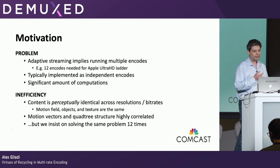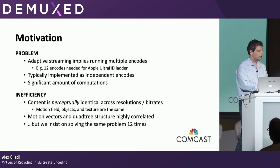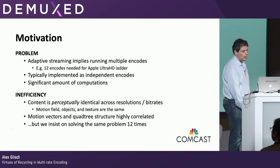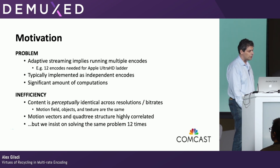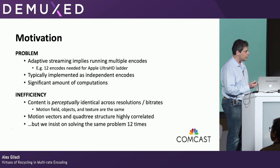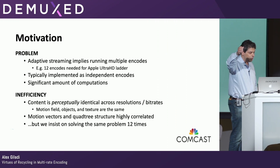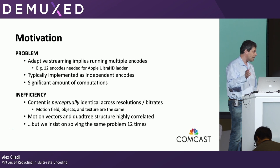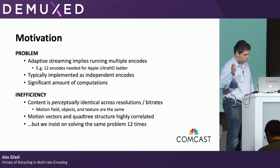The motivation — the same problem: a lot of encodes. In the case of Apple HLS, you have 12 encodes that you actually need to do to provide Ultra HD content. This requires a significant amount of computation. And there is a glaring inefficiency here, because the content is perceptually identical. If I'm moving my hand, those of you viewing it on live stream will see exactly the same hand. The only difference is how many pixels it occupies.